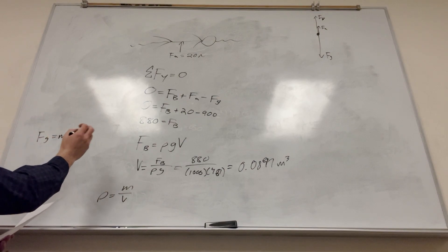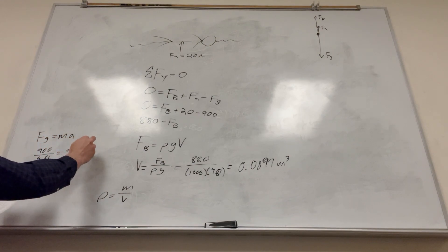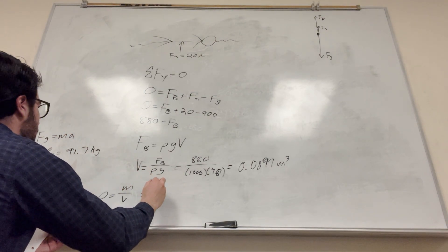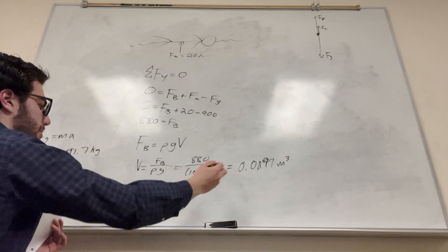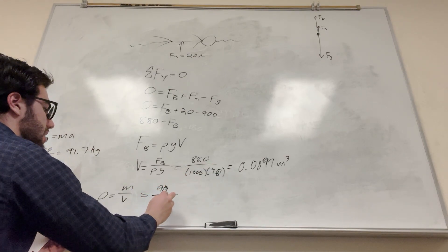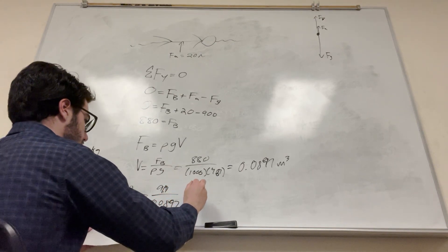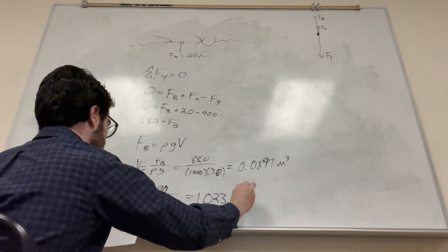So we take 900, divide it by 9.81. You're going to get its mass, which is about 91.7 kilograms. Okay. So then we can just plug these numbers in. So we know it's 91.7 kilograms, and then divide it by its volume, 0.0897. And you're going to get 1,023 kilogram meter cubed.